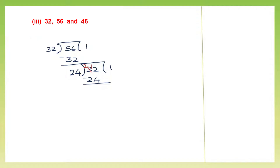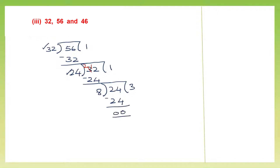So I'm going to continue my division, putting 24 inside. 3s are 24 itself. Now when we subtract, we get 0. And here the final divisor which gave us 0 is 8 — so that is the HCF of 32 and 56.